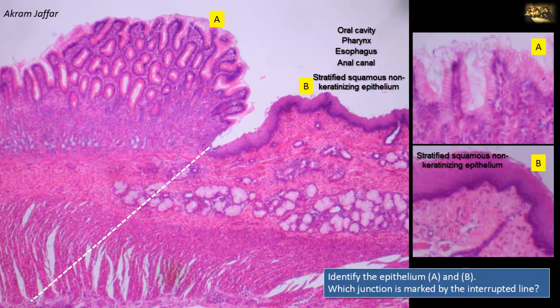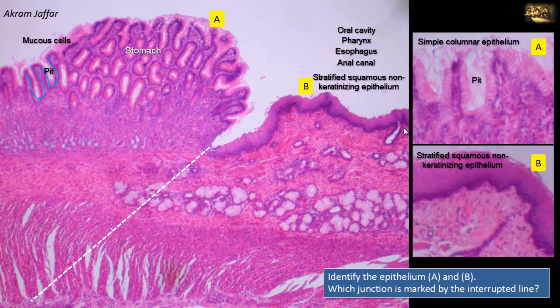Epithelium A is simple columnar epithelium composed of mucous cells, as seen by their almost empty cytoplasm. They cover the luminal surface and also the pits present here. These columnar cells are packed with cytoplasmic mucigen granules, which stain poorly with hematoxylin and eosin. This is the lining epithelium of the stomach, where mucous cells secrete the protective mucus that guards against autodigestion by hydrochloric acid.